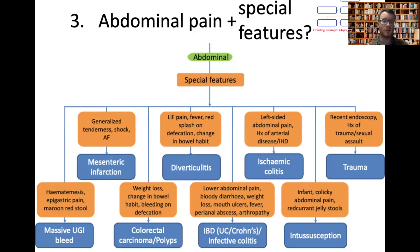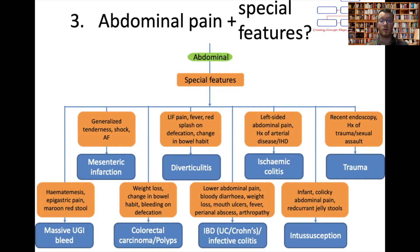For those with abdominal pain, we still need to exclude massive upper GI bleeding causes. These tend to be patients with haematemesis — vomiting blood — or with epigastric pain. Keep in the back of your mind: is this actually an upper GI problem? If so, you'll go down a different route of investigations, perhaps doing an OGD instead.